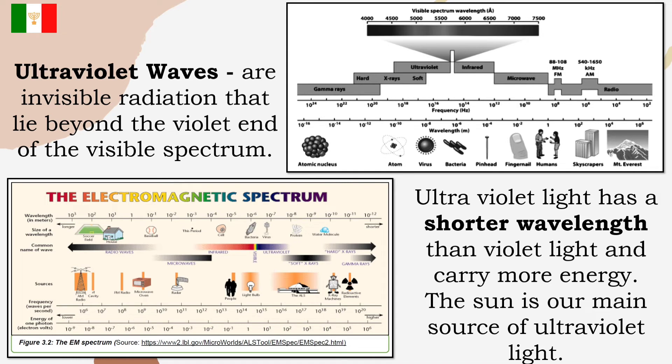Ultraviolet waves are invisible radiation that lie beyond the violet end of the visible spectrum. Ultraviolet light has a shorter wavelength than violet light, and carry more energy. The sun is our main source of ultraviolet light. Ultraviolet is a form of electromagnetic radiation with wavelength from 10 to 400 nanometer. Shorter than that of visible light, but longer than x-rays. UV radiation is present in sunlight, and constitutes about 10% of the total electromagnetic radiation output from the sun.